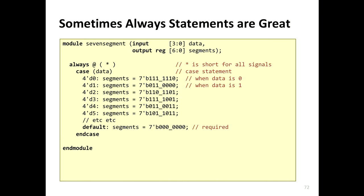Student question: if we have a register, can we access that variable from a different always block? You can read it, but you have to be careful. If you're just reading the values, it's fine. But if you're assigning to it in multiple places, the realizer is going to get confused and give you a conflict.